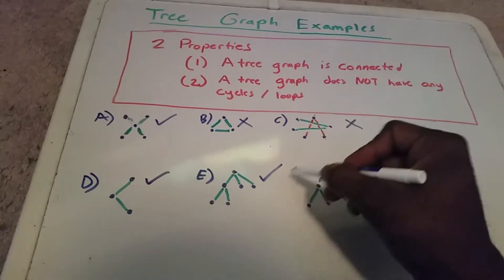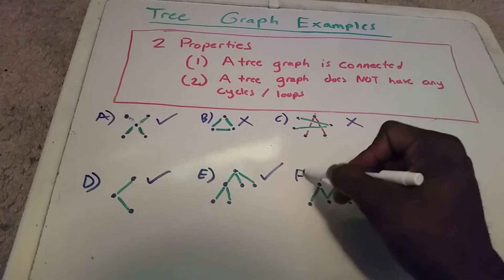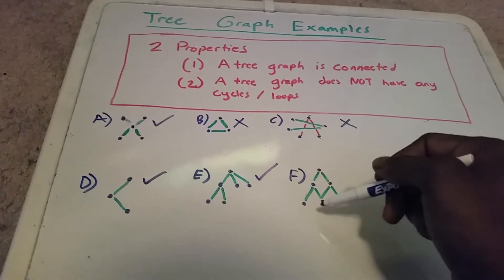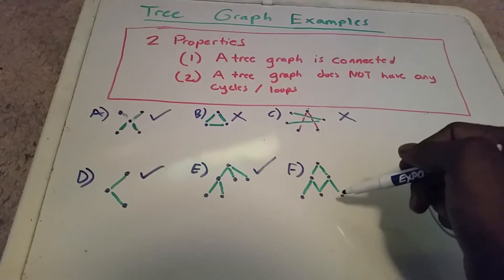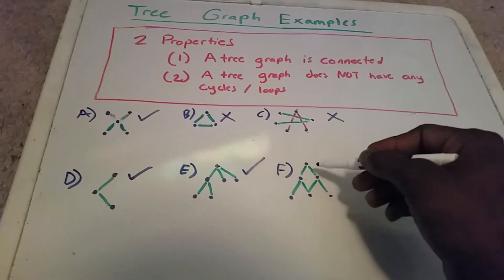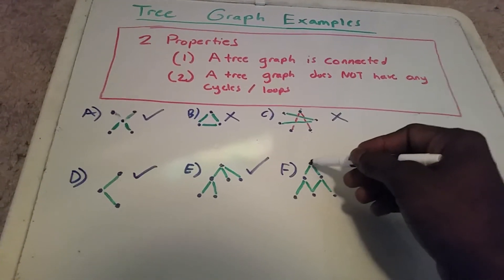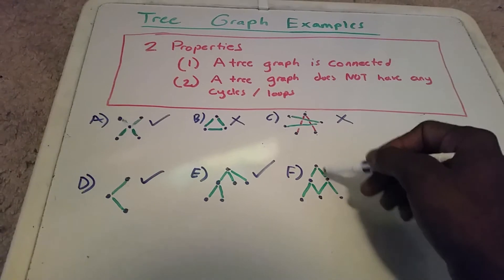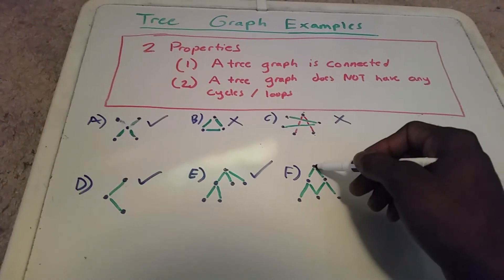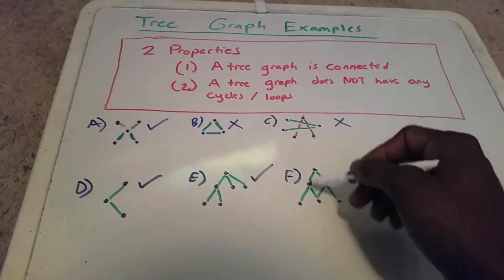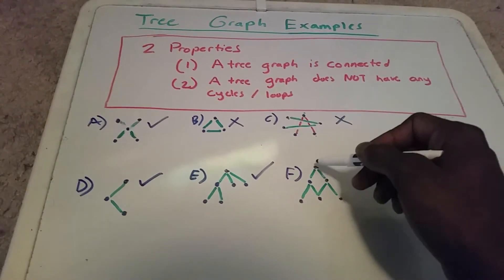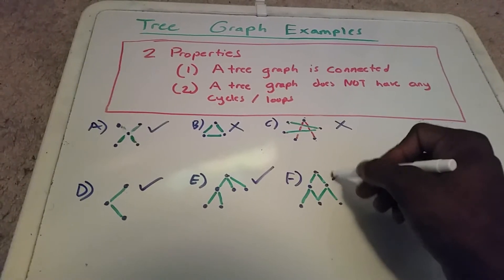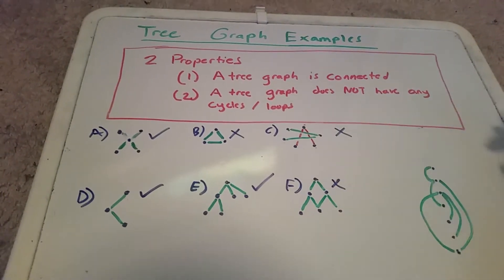Here we can see that every single node is connected, but there's a cycle. I can get from this node to this one, to this one, to this one, back to the original node. So there's a cycle right there — it doesn't satisfy property number two, so it's not a tree graph.